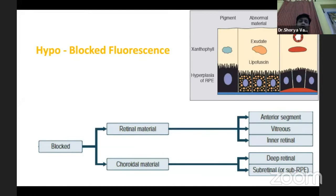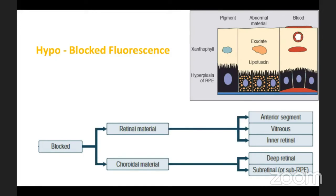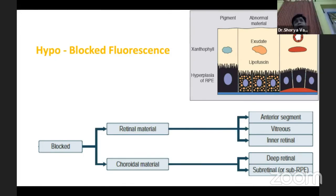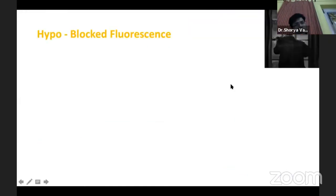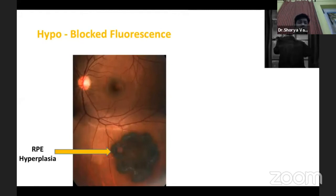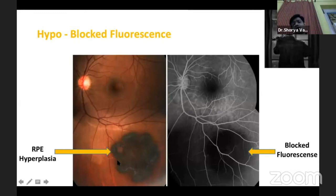Moving on to hypo lesions. These can either be blocked fluorescence or filling defects. Blocked fluorescence can block either the retinal vasculature or the choroidal vasculature. If it is blocking the retinal vasculature, it can be something in the anterior segment like a PCO or PSC, in the vitreous like a vitreous hemorrhage, or in the inner retina like intraretinal hemorrhages or exudates. If it is blocking the choroidal vasculature, it can be deep retinal, subretinal, or sub-RPE bleed. As seen in this photograph, an RPE hyperplasia causes a corresponding blocked fluorescence on angiogram.